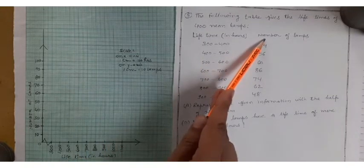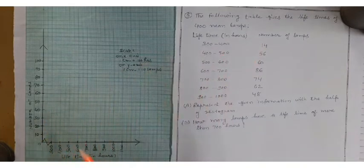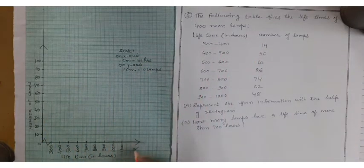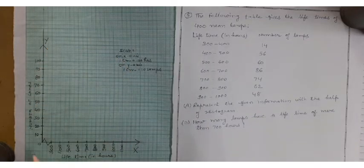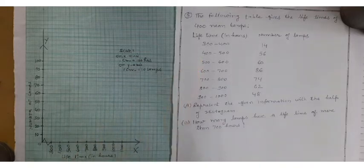Here is given number of lamps, so you have to take on y-axis. This is on x-axis. This is on here y-axis. I have made one kink here because things are started from 300.